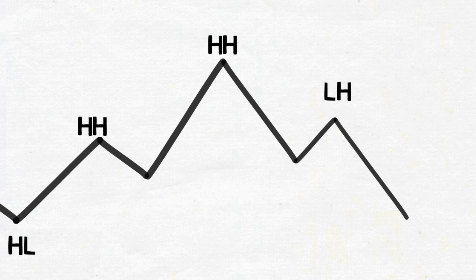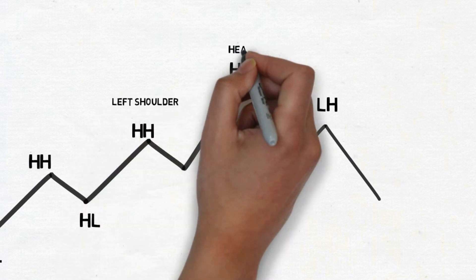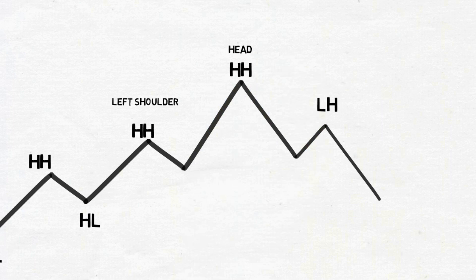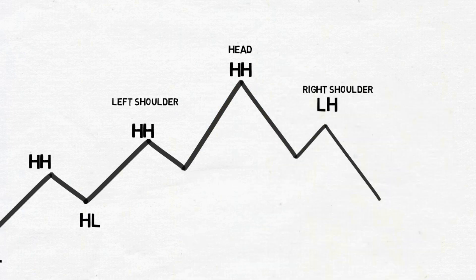When this pattern is formed in an uptrend, it is treated as a trend reversal pattern. When this pattern forms at a major resistance level, it adds more confirmations. This is called the first shoulder — most people call it the left shoulder. This is called the head. And this we will call the right shoulder. These look like a person's head and shoulders.